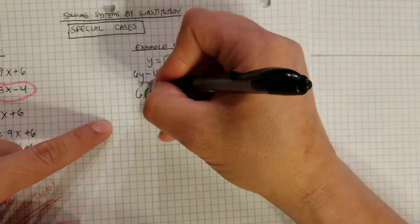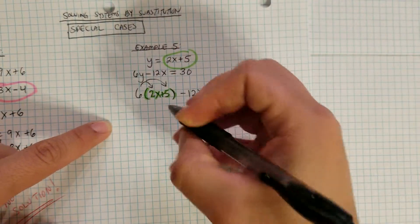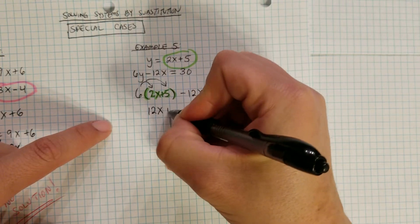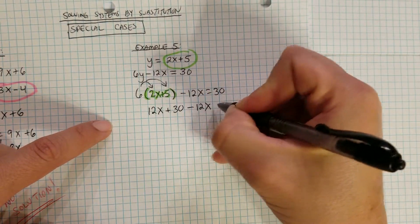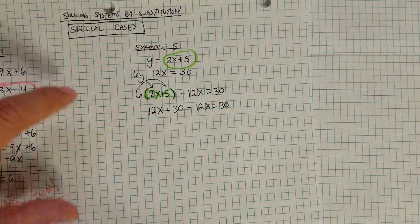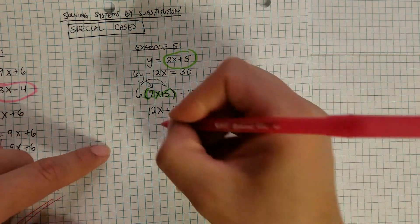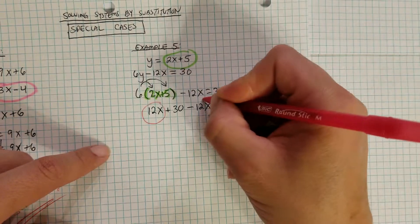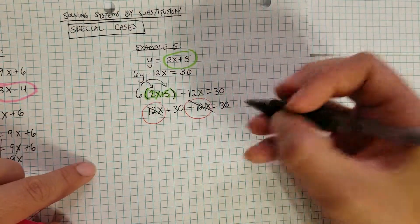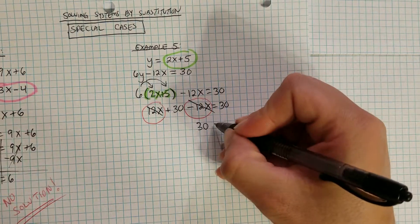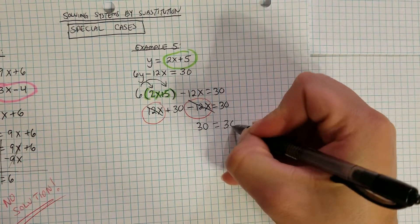So if we try to solve this same as the last one, we do the distributive property, which gives us 12x plus 30, and then drop down the 12x, and then set that equal to 30. Then we combine like terms like we usually would. So the x's go together. Notice that the x's go away. So now we have an equation, 30 is equal to 30.